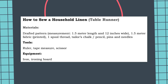Now let's discuss how to sew a household linen, specifically a table runner. The materials you will need are: a drafted pattern with a measurement of 1.5 meters in length and 12 inches wide; 1.5 meters of fabric, either printed or plain; one spool of thread; tailor's chalk or pencil; pins and needles; tools such as a ruler, tape measure, and scissors; and equipment like an iron and ironing board.